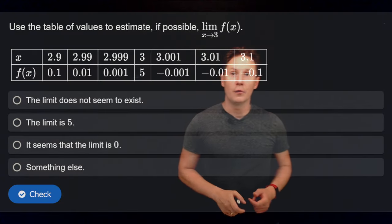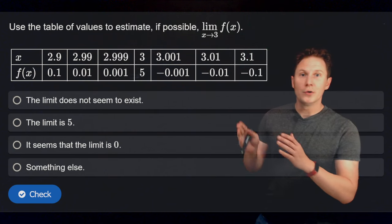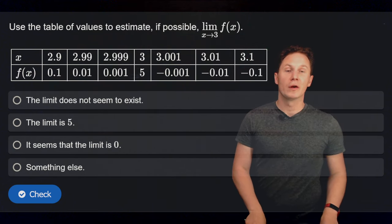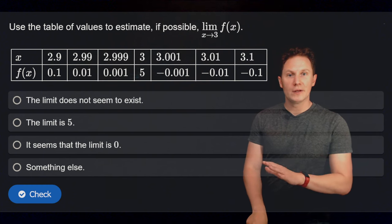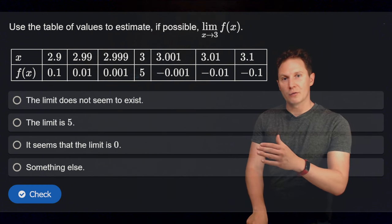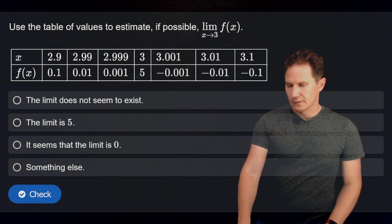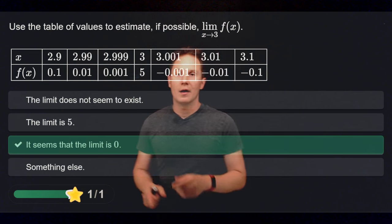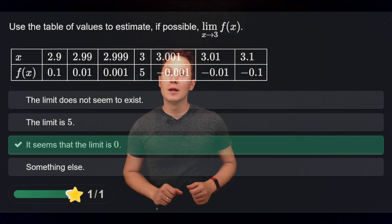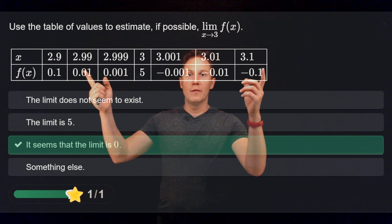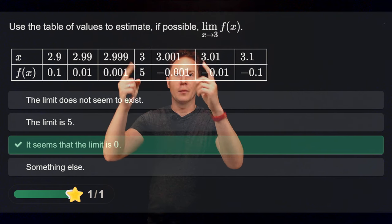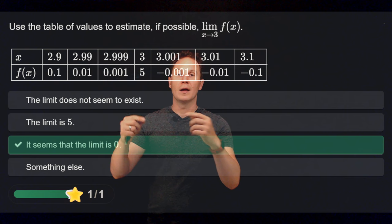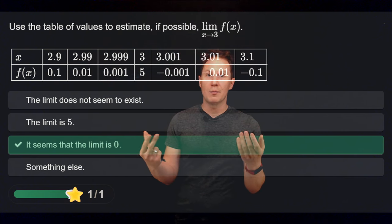Let's see if you got the idea of limits. Use the table of values to estimate, if possible, the limit as x approaches 3 of f(x). Looking at the table with x approaching 3 from either side, you can see the values f(x) getting closer and closer to 0, so the limit is 0.